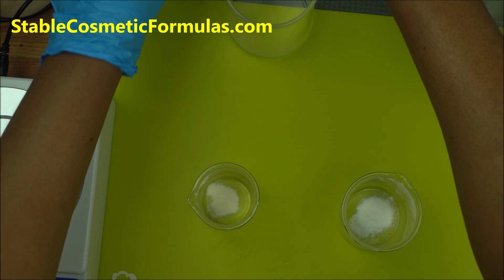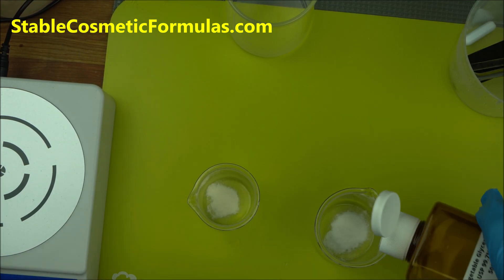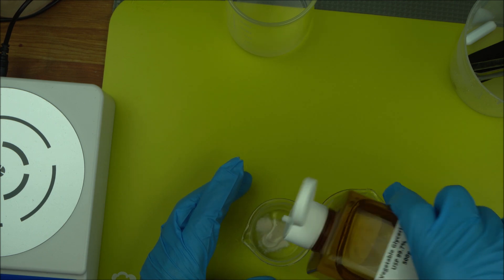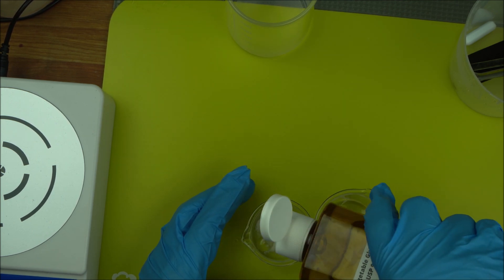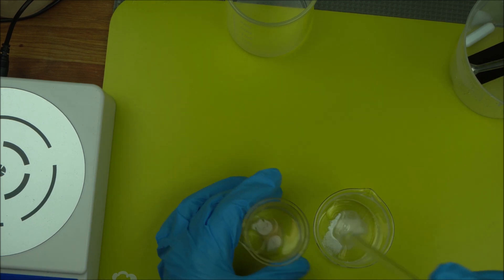We will add our glycerin to both. The essence of adding glycerin to any gum is to break down the particles to prevent clumps.